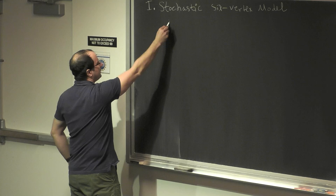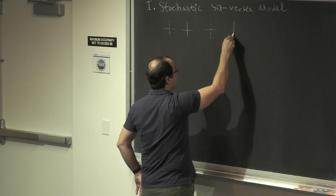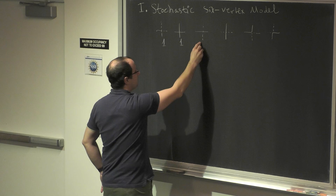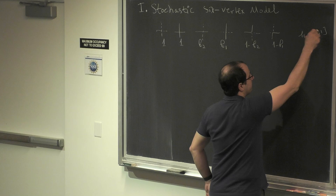I'm going to talk about the stochastic six-vertex model. The vertex states in the stochastic six-vertex model are six possible configurations, which have weights one. This has weight b2, this has weight b1, this has weight 1 minus b2, this has weight 1 minus b1. And b_i are between 0 and 1.